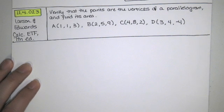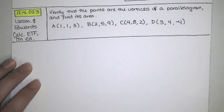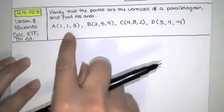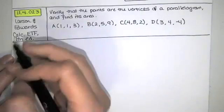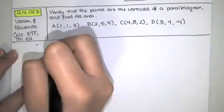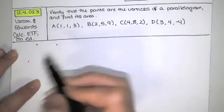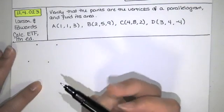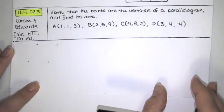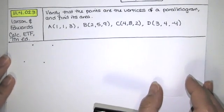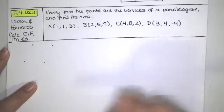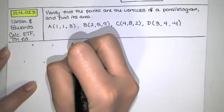We're asked to verify that the points are the vertices of a parallelogram and find the parallelogram's area. So I don't actually know which points are which, but I think one of the easiest ways to start this is to compute vectors from point to point.